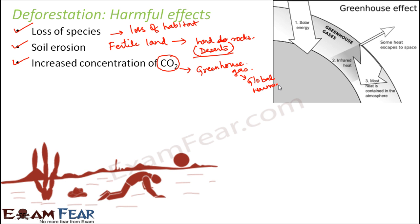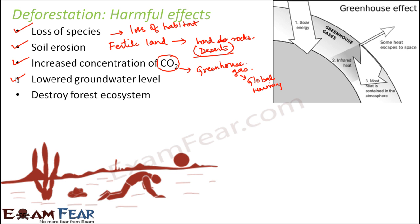The average temperature of the earth will keep increasing and gradually reach a temperature not suitable for the survival of living organisms. Additionally, too much increase in carbon dioxide concentration can also lead to pollution. Carbon dioxide increase is disadvantageous for the environment. When plants are removed, the level of groundwater also reduces. The entire forest ecosystem is also destroyed — because the plants have been cut down, animals cannot survive without them, and so the entire ecosystem is spoiled.